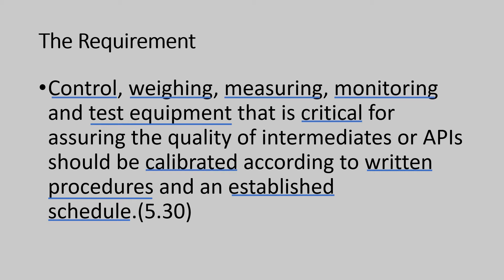Let us understand the intent of the requirement. We have all sorts of controlling, weighing, measuring, monitoring and test equipment for the manufacture of APIs and intermediates. There is a rider here — critical for assuring the quality. All the listed items have to be calibrated if critical for the quality of the output. It is recommended to have a detailed list of critical equipment. Any equipment that has direct impact on the quality of output is considered as critical. This aspect has to be established by a detailed discussion and evaluating through risk management principles.